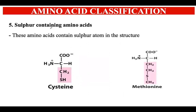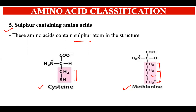The next category is sulfur-containing amino acids — some amino acids contain a sulfur atom in the R chain. Two examples are cysteine (Cys) and methionine (Met). Cysteine has one sulfur atom attached to a methyl group, whereas methionine has two carbons and one sulfur with a free methyl group at the end.